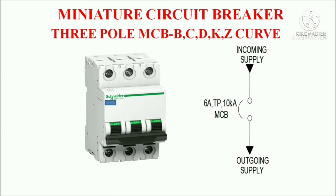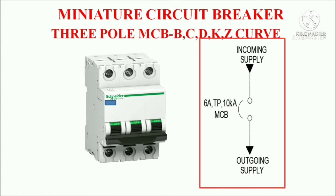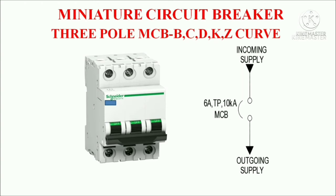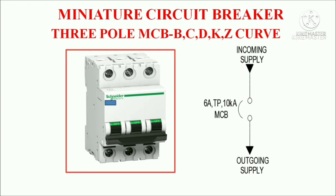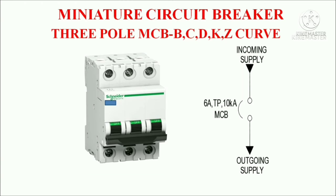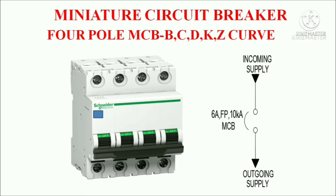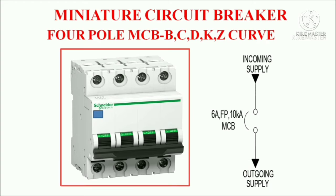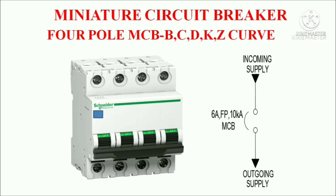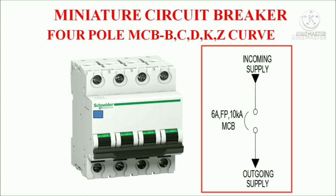Symbol of triple pole MCB — this is the symbol of 3 pole MCB and the physical appearance of 3 pole MCB is shown here. Symbol of 4 pole MCB — the physical appearance of 4 pole MCB is shown here, and the symbol of MCB is shown here.